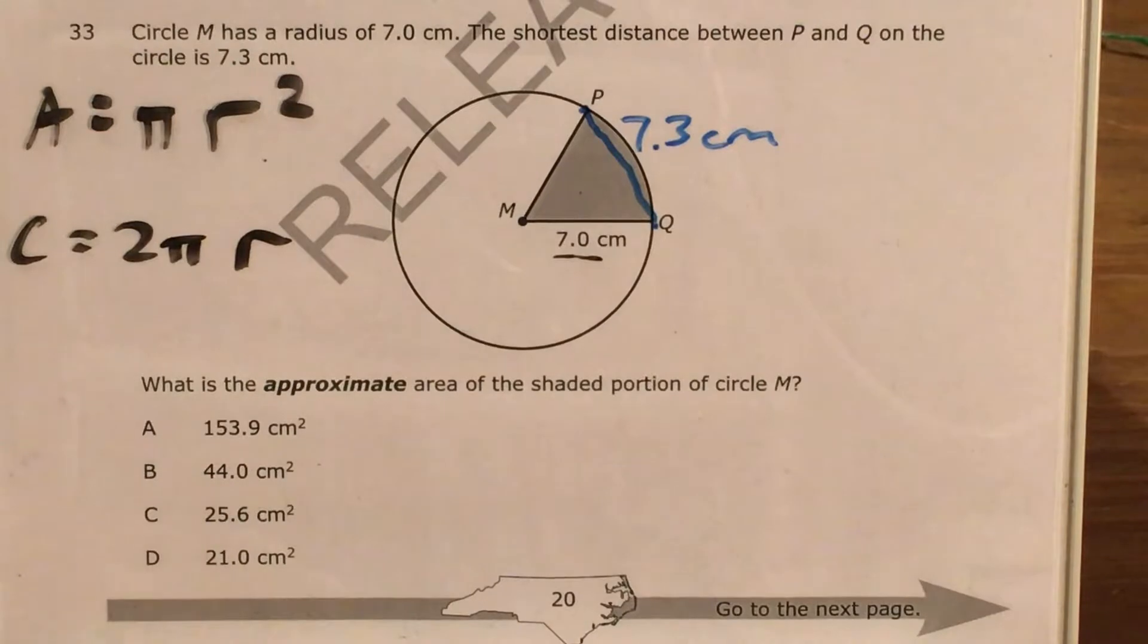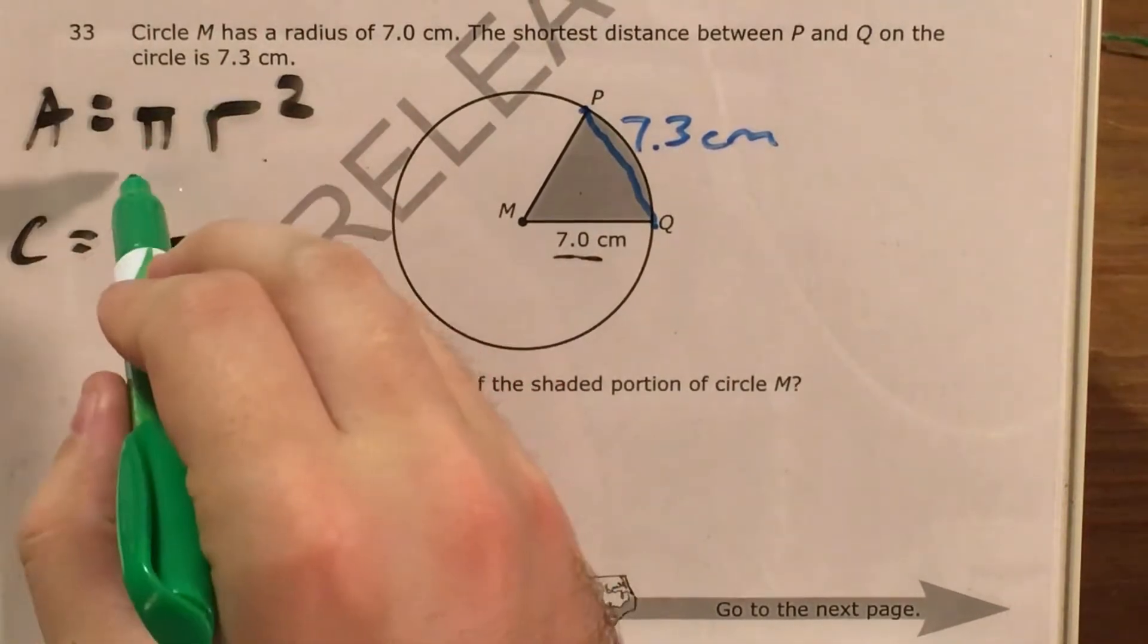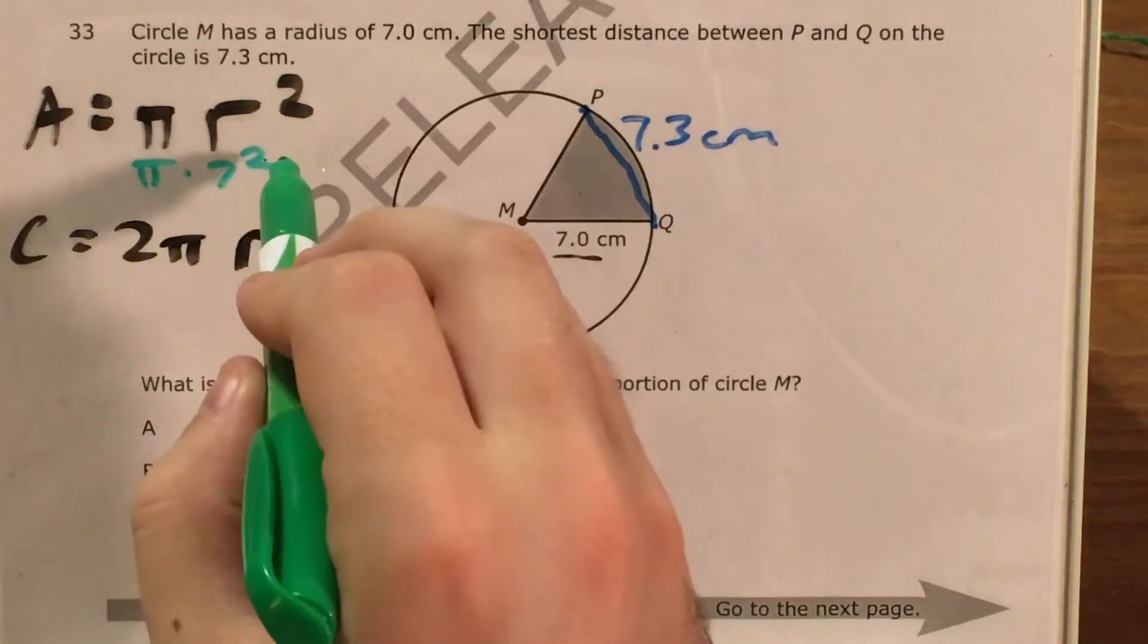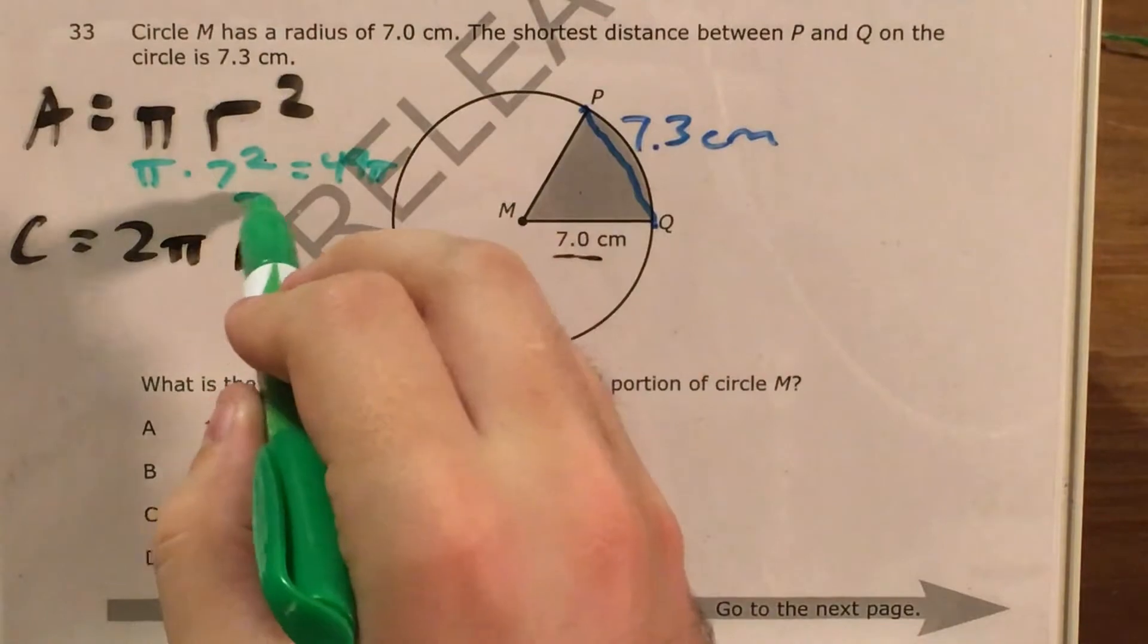So let's go ahead and figure out what my area and my circumference would be. For my area, I'm going to plug 7 in for my radius, and I'm going to say that pi times 7 squared is equal to 49 times pi.